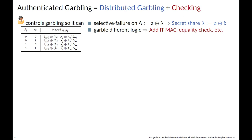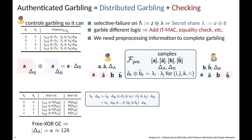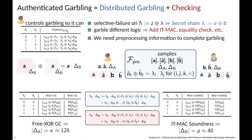We begin with garbling notations. In semi-honest GC, the garbler Alice can mount a selective failure attack to learn the masked capital-Λ value, and since she controls all the wire masks small-λ, she learns the true value z, violating privacy. The solution is to secretly share the mask Λ between Alice and Bob so that the masked value appears uniformly random, so Alice learns no information. Alice can also garble different logic in the truth tables, and the solution is to authenticate the garbling process under the evaluator Bob's global key.